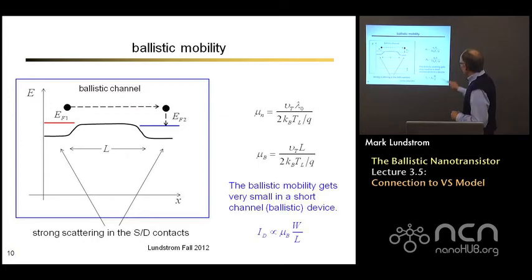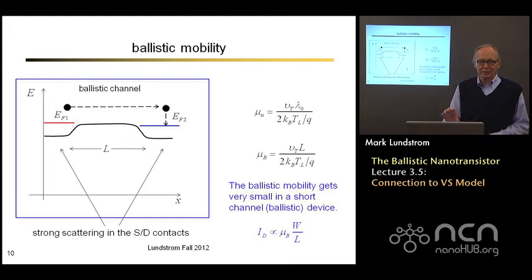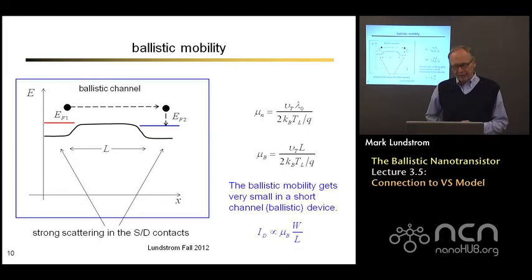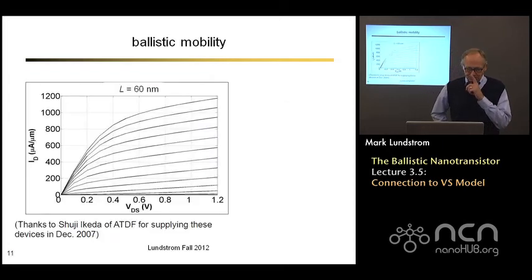You can see that as the device gets very short, the ballistic mobility gets smaller and smaller. So it's possible to be confused when you're looking at experimental results and you're looking at very short channel devices. If you deduce the mobility of a very short channel device you might find it falling. What you might be seeing is that you're reaching the ballistic limit, and you're actually extracting the ballistic mobility and not the real mobility. Now if you ask what happens in the limit, we have that as L approaches zero, the ballistic mobility also approaches zero and everything goes to a nice limit and that limit is the ballistic current of the MOSFET. So no problems with W over L going to infinity as we scale MOSFETs to shorter and shorter channel lengths.